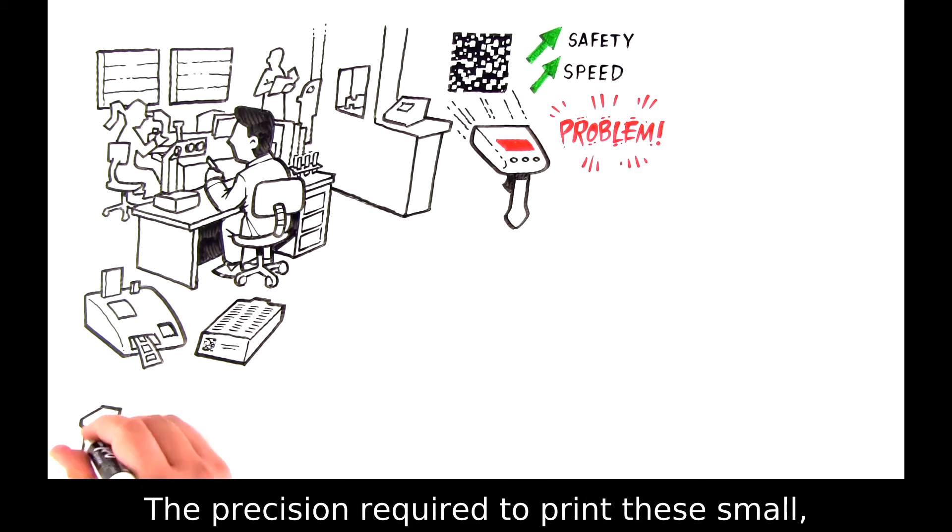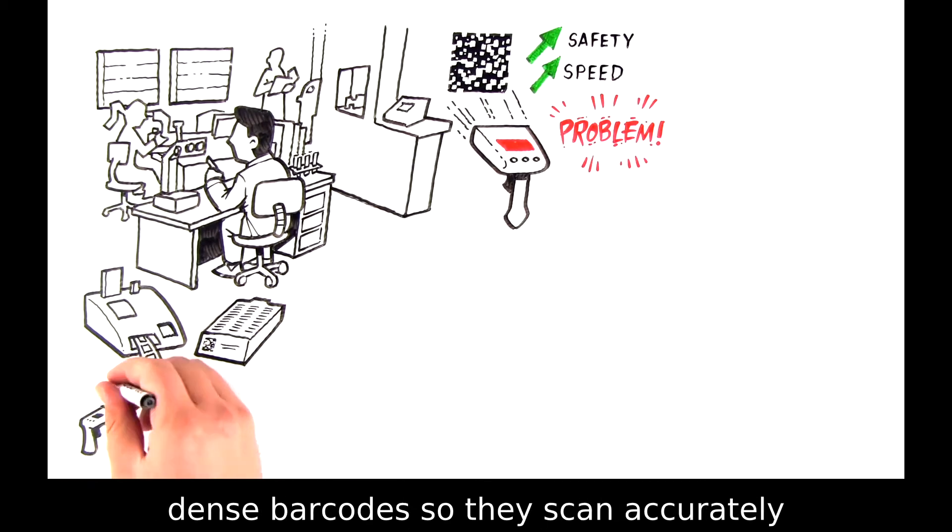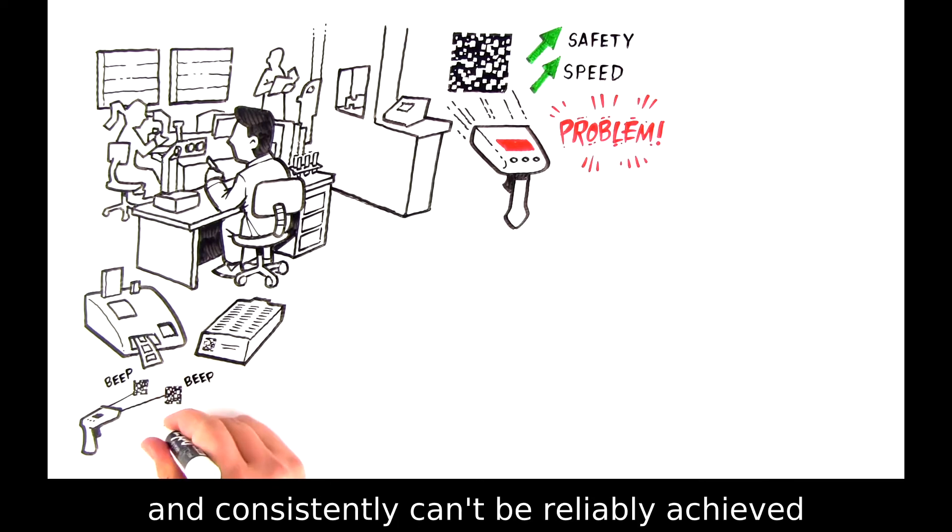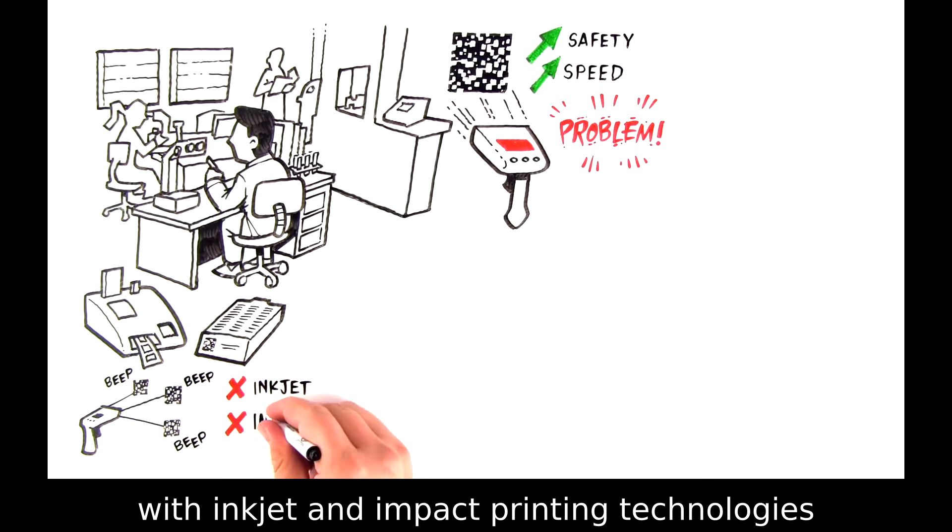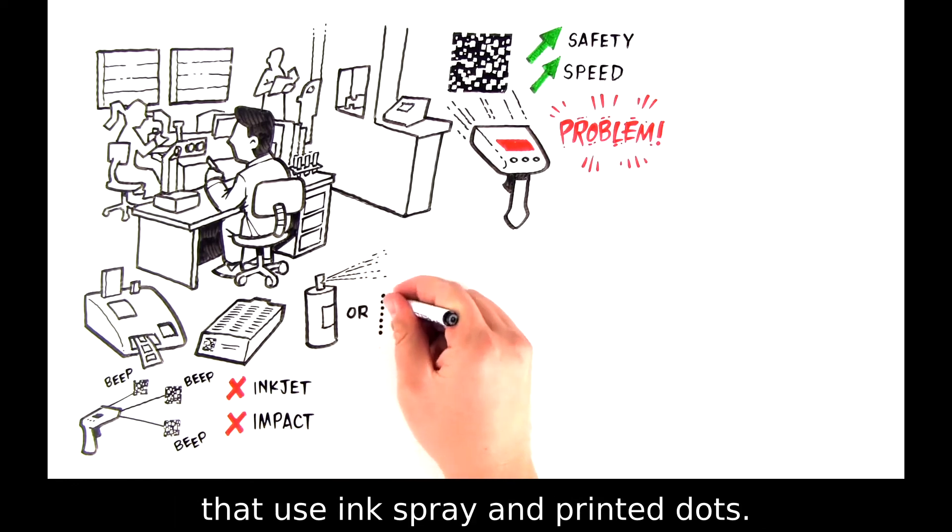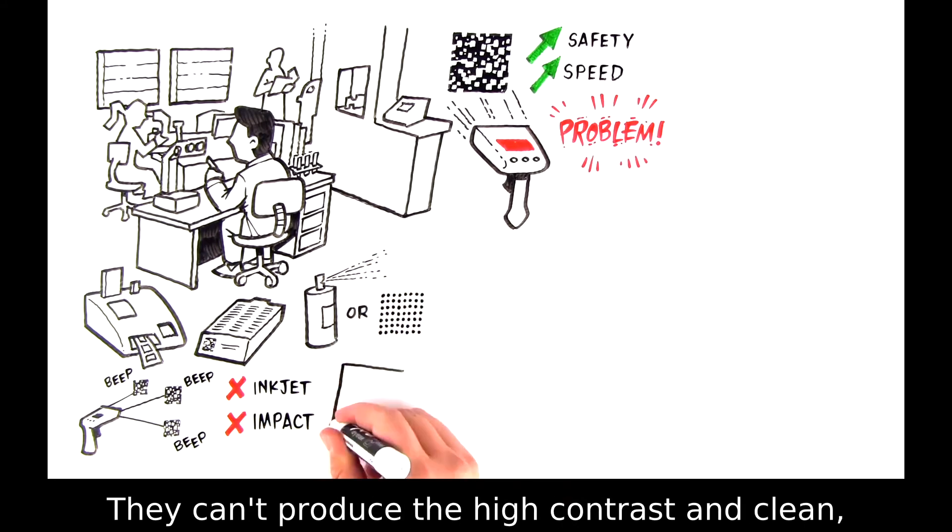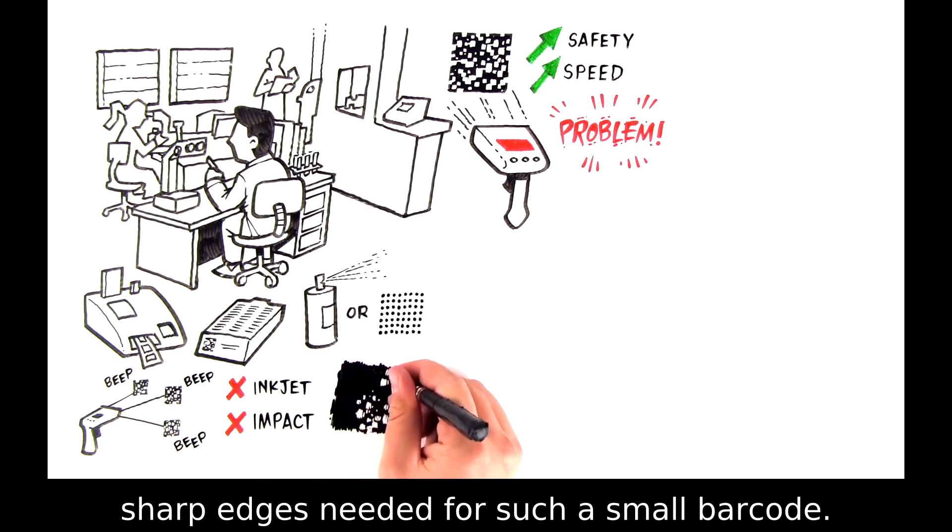The precision required to print these small, dense barcodes so they scan accurately and consistently can't be reliably achieved with inkjet and impact printing technologies that use ink spray and printed dots. They can't produce the high contrast and clean, sharp edges needed for such a small barcode.